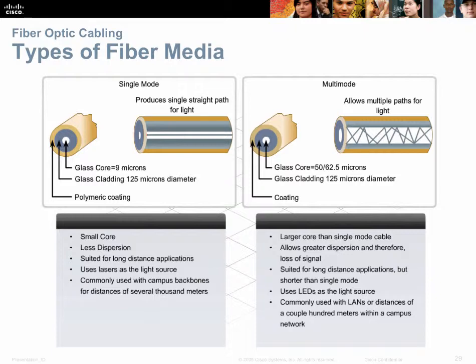Single-mode fiber is the industry standard with the highest performance, sending one burst of light at a time down the very narrow core — capable of going up to 25 kilometers. Multi-mode fiber sends multiple light signals simultaneously at much lower cost, can use plastic instead of glass and LEDs instead of lasers. It is commonly used for limited-distance applications and currently supports up to 10 Gig speeds.